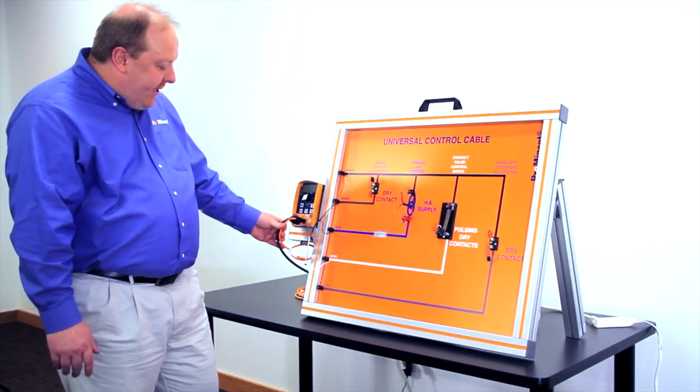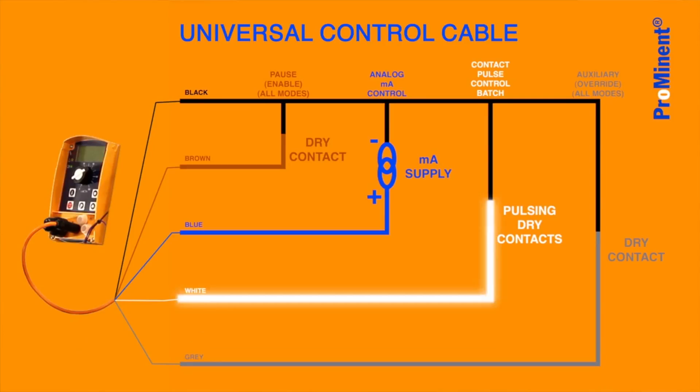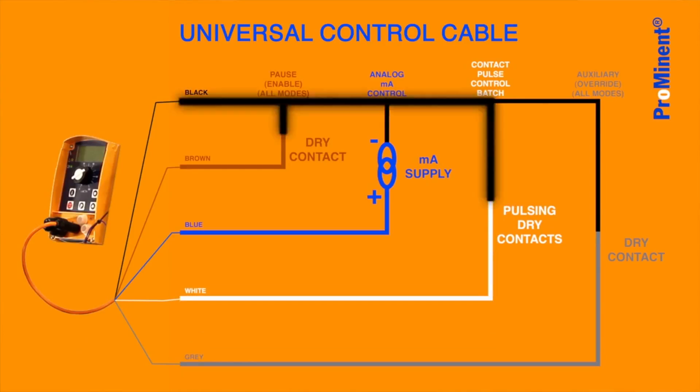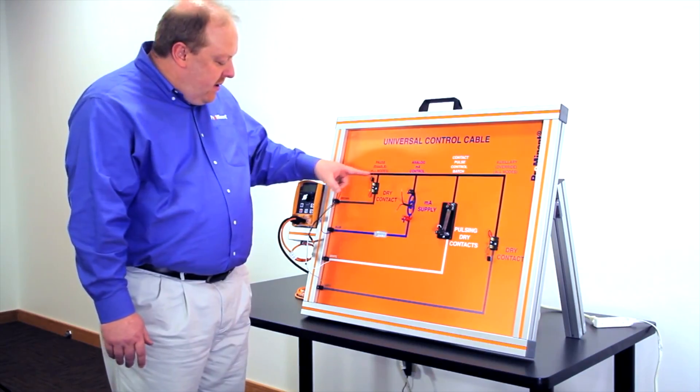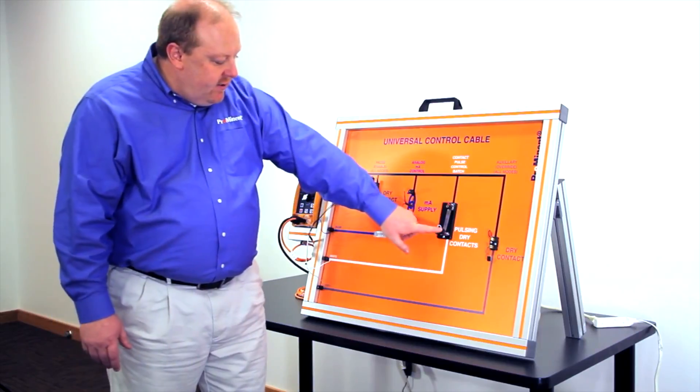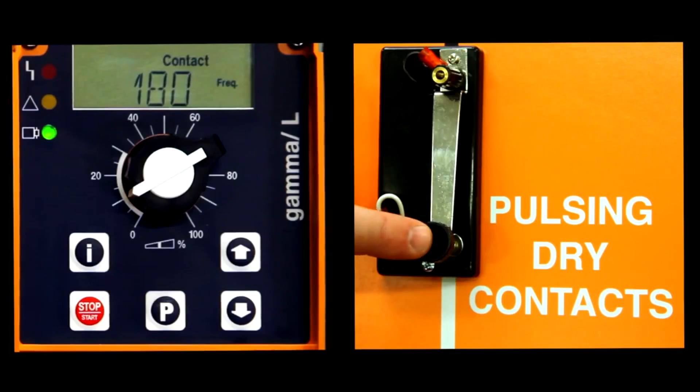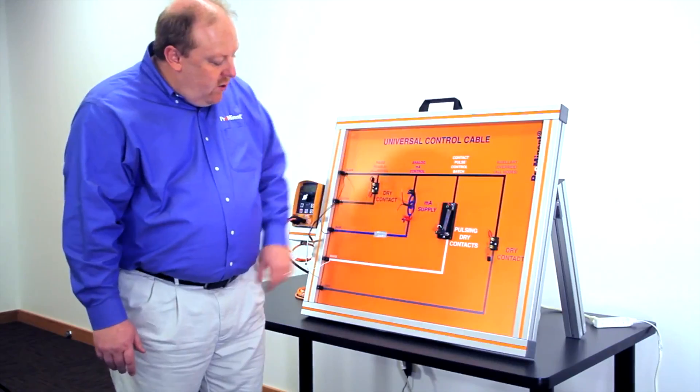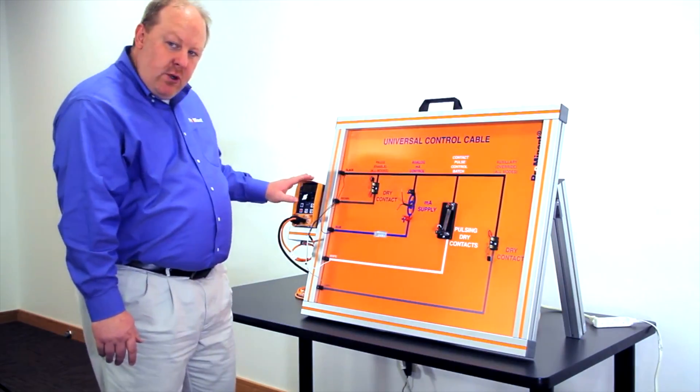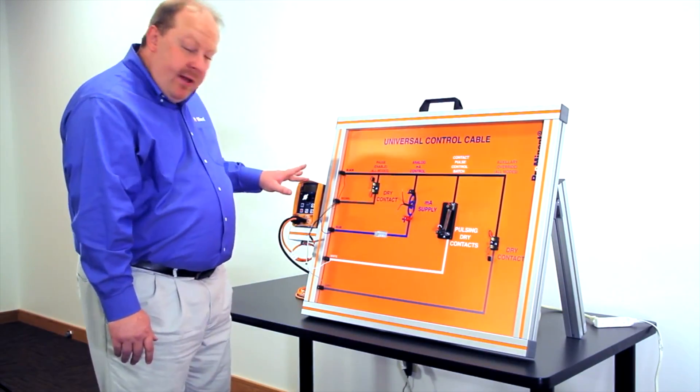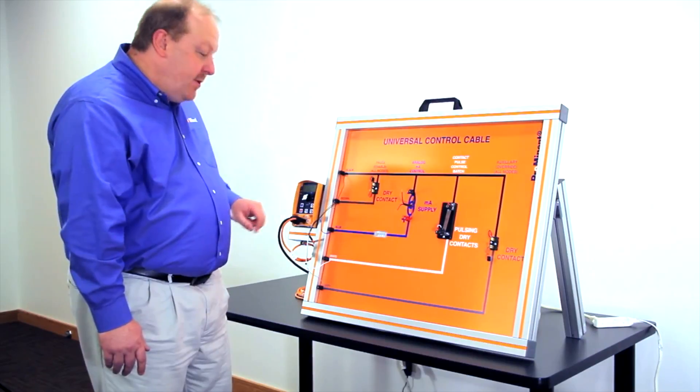To initiate the contact mode of operation, we need the white wire to short to the black wire, which is in contact again with the brown wire. That's our pause function. Every time we press this button, it's going to short our white wire to that black wire, which is contacted to the brown wire. One contact in, the pump strokes one time. We can manipulate that ratio with other options on the pump.